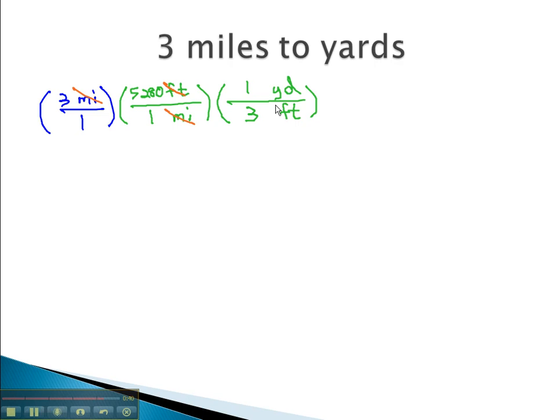Now, the feet will divide out, and we can multiply straight across. 3 times 5,280 times 1 yard is 15,840 yards. Over 1 times 1 times 3 is 3, and when we divide, we get 5,280 yards.